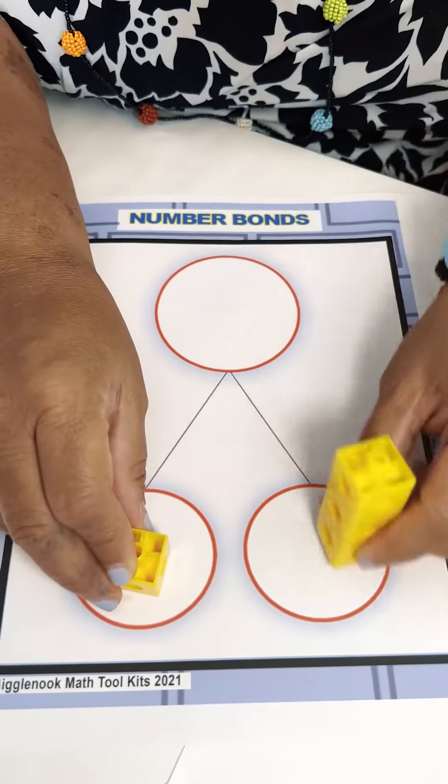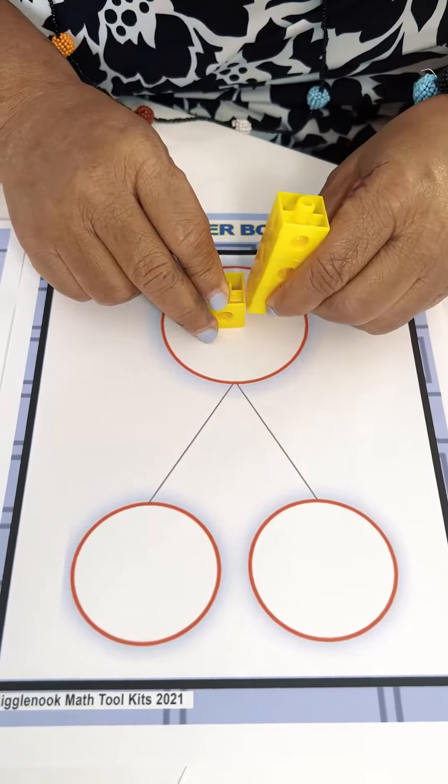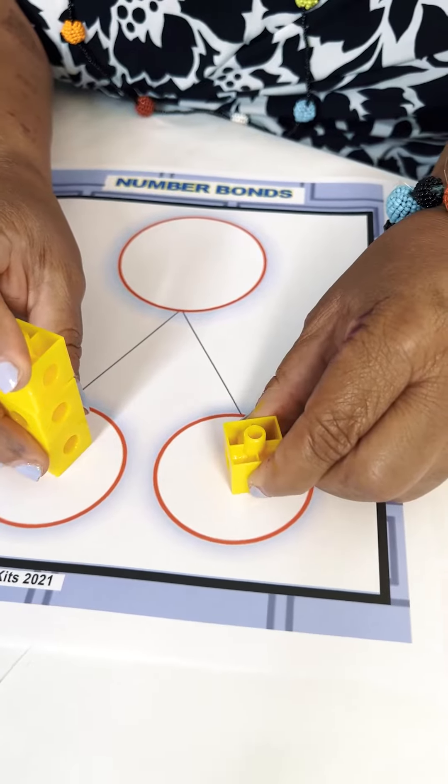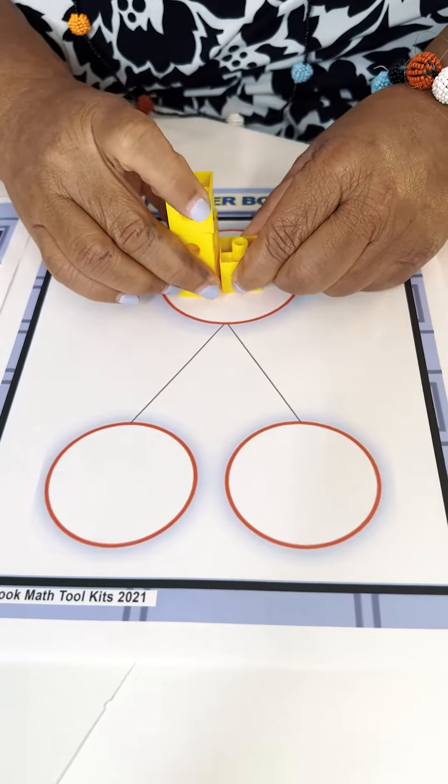If you break it apart, you can break it up into one and three. Or you can put it back together and it makes four. Or we have three and one. You can break four into three and one. We can take three and one, put it together and make four.